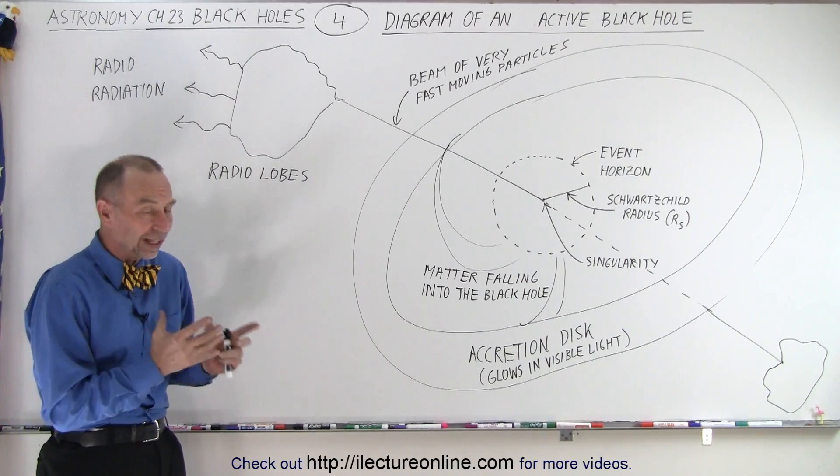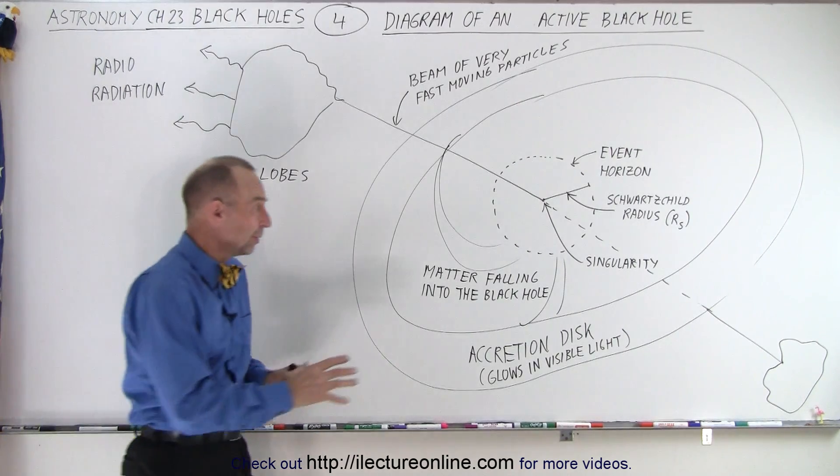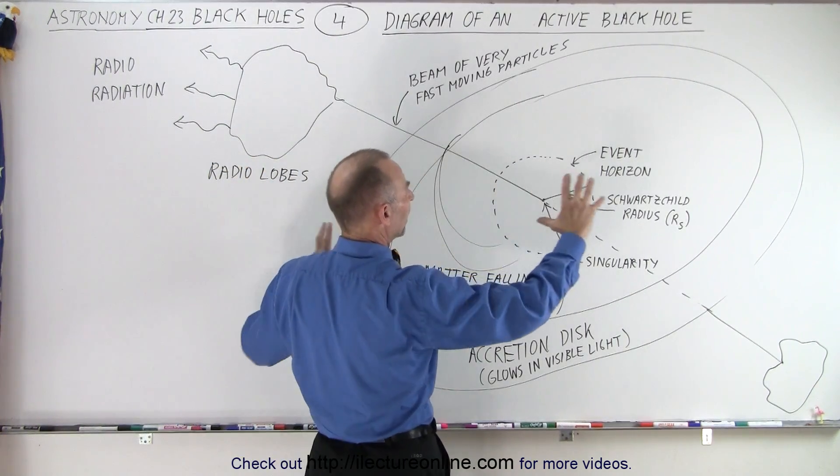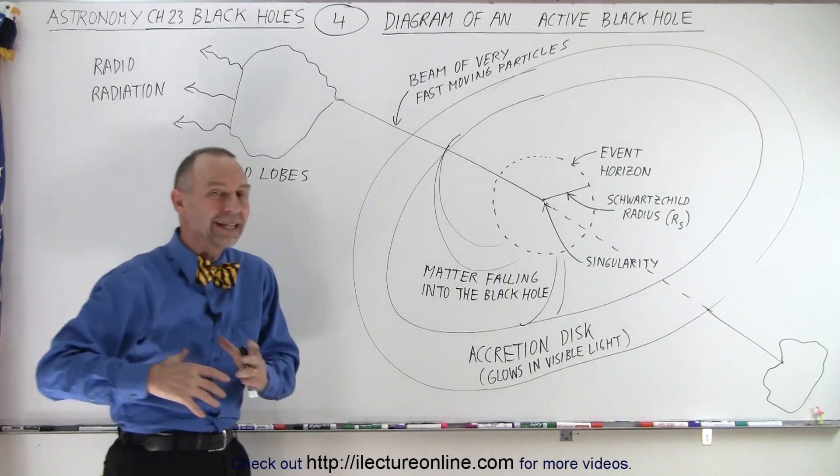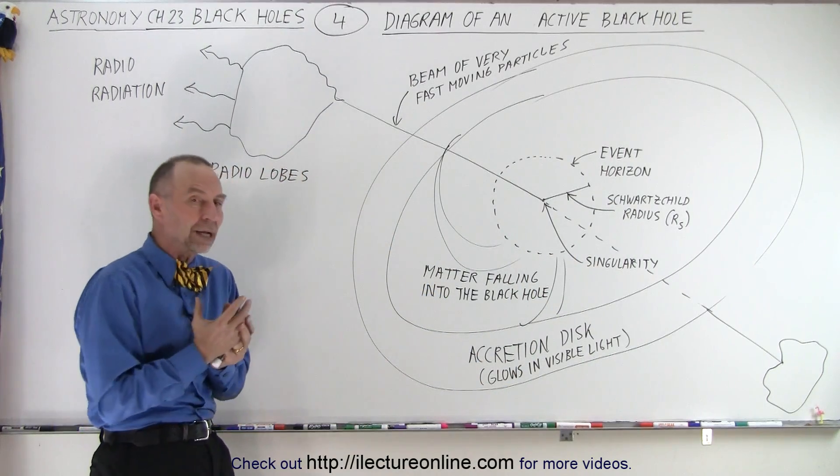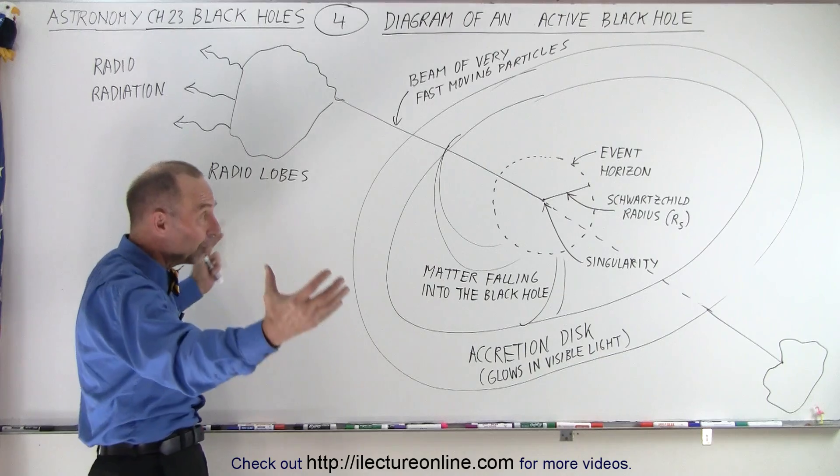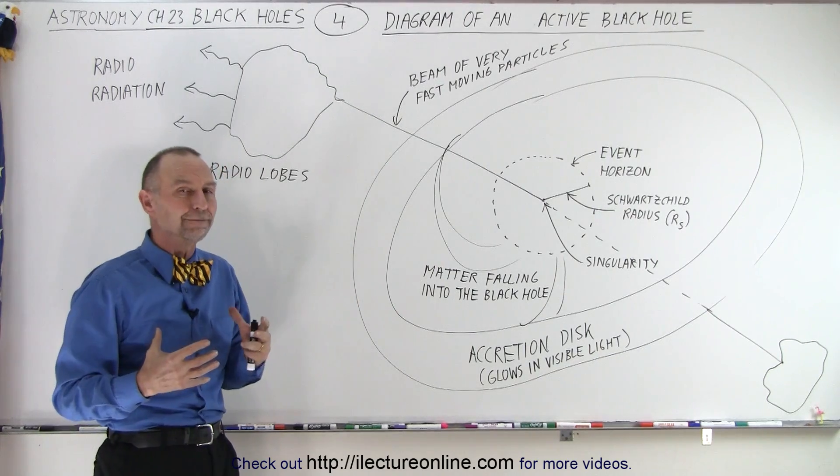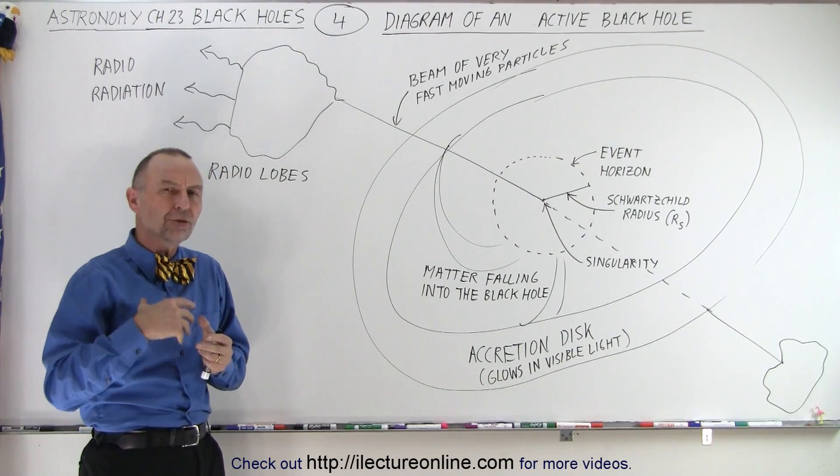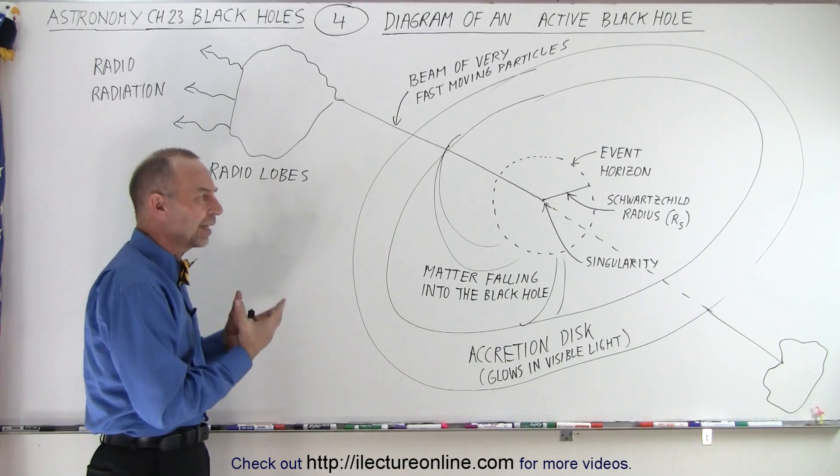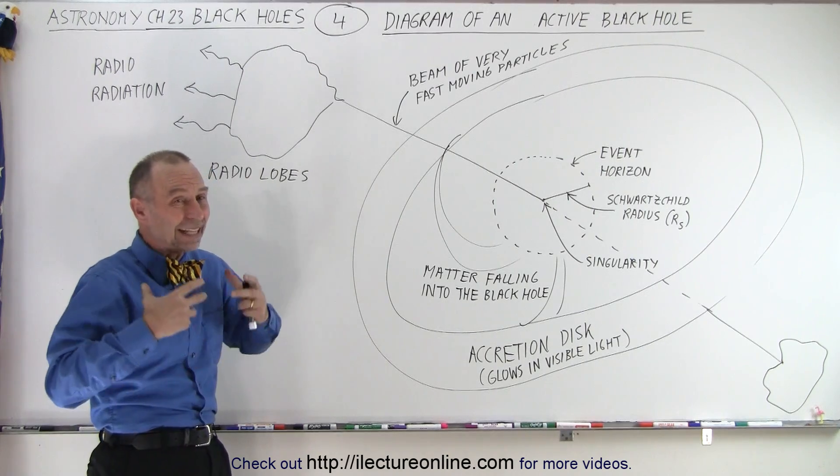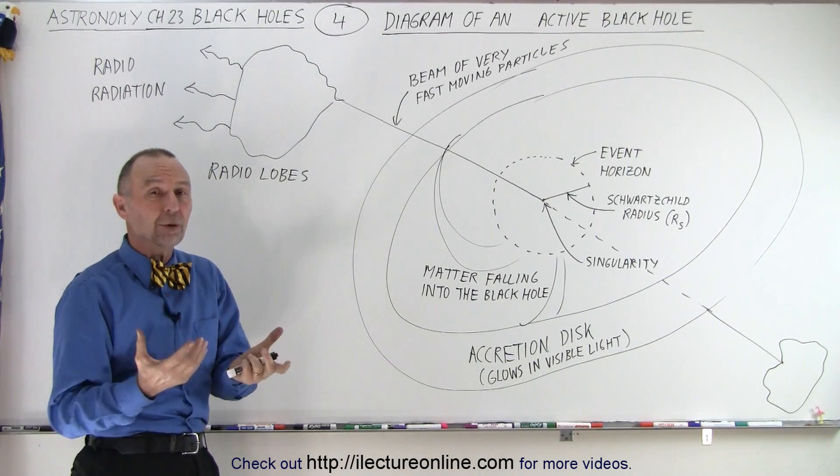In an active black hole we still have those same three basic parts, but now we've zoomed out a little bit because if the black hole is active, that means it's pulling in material from the outside. A black hole is an opportunistic kind of thing.